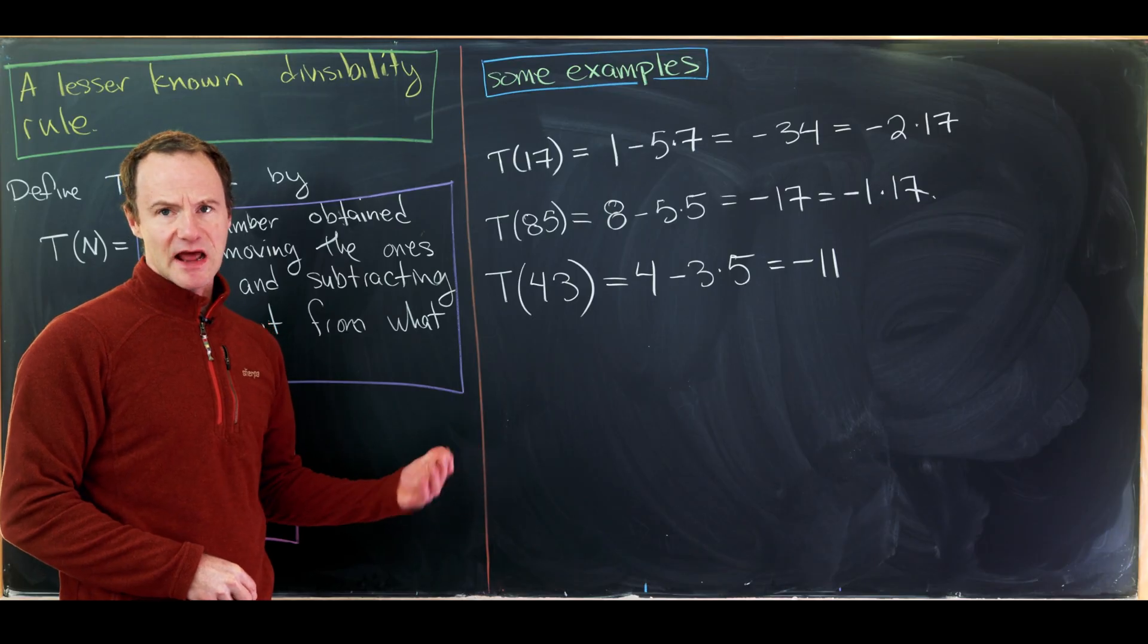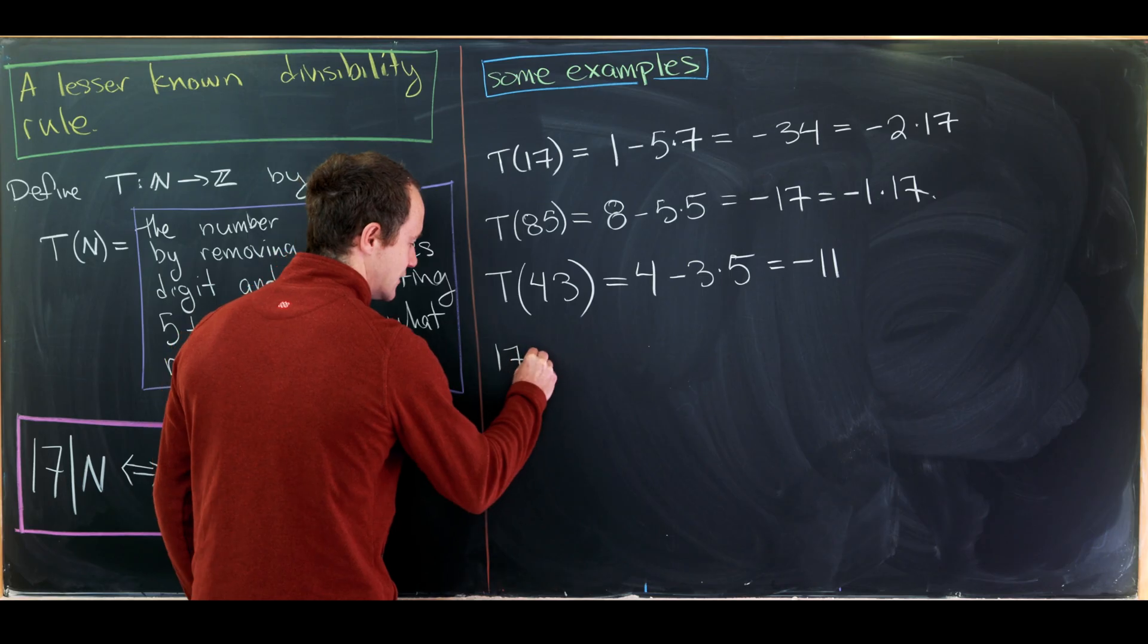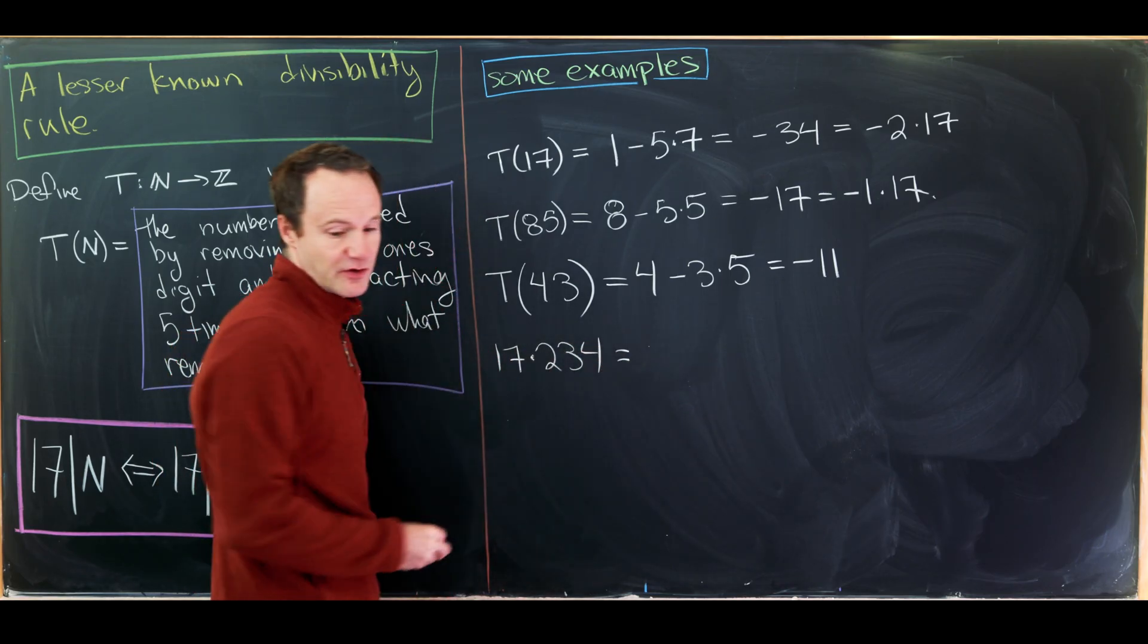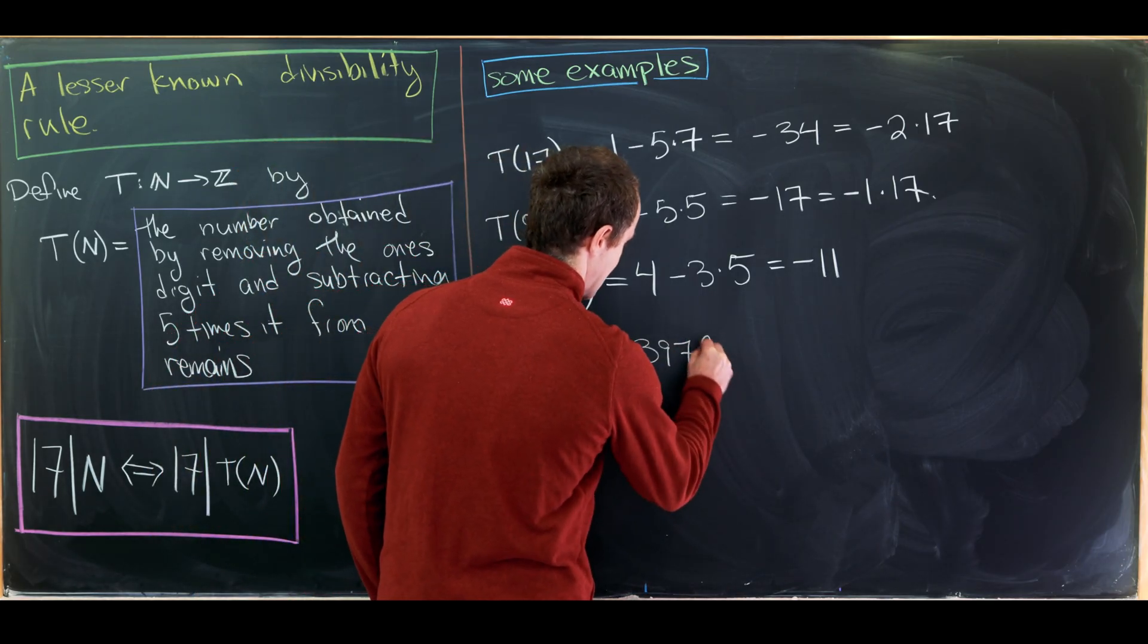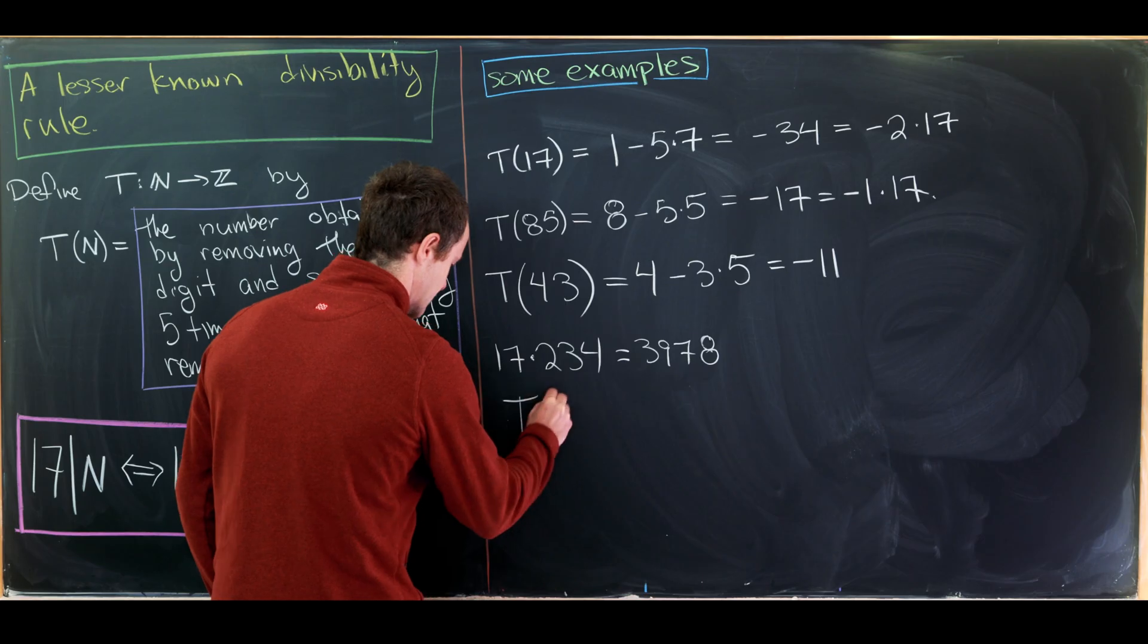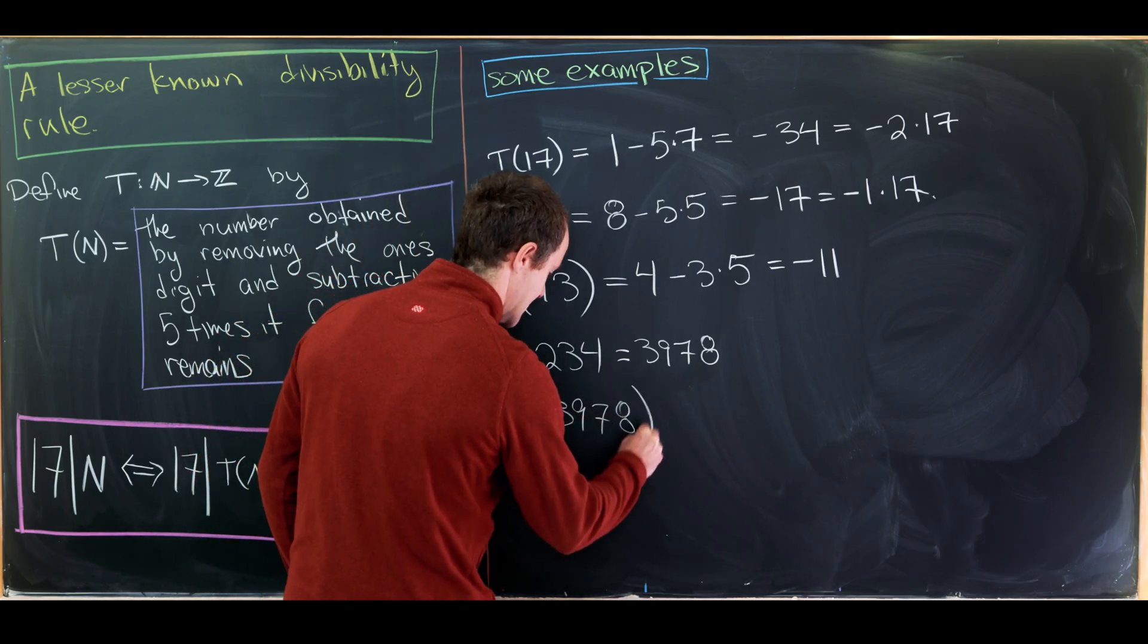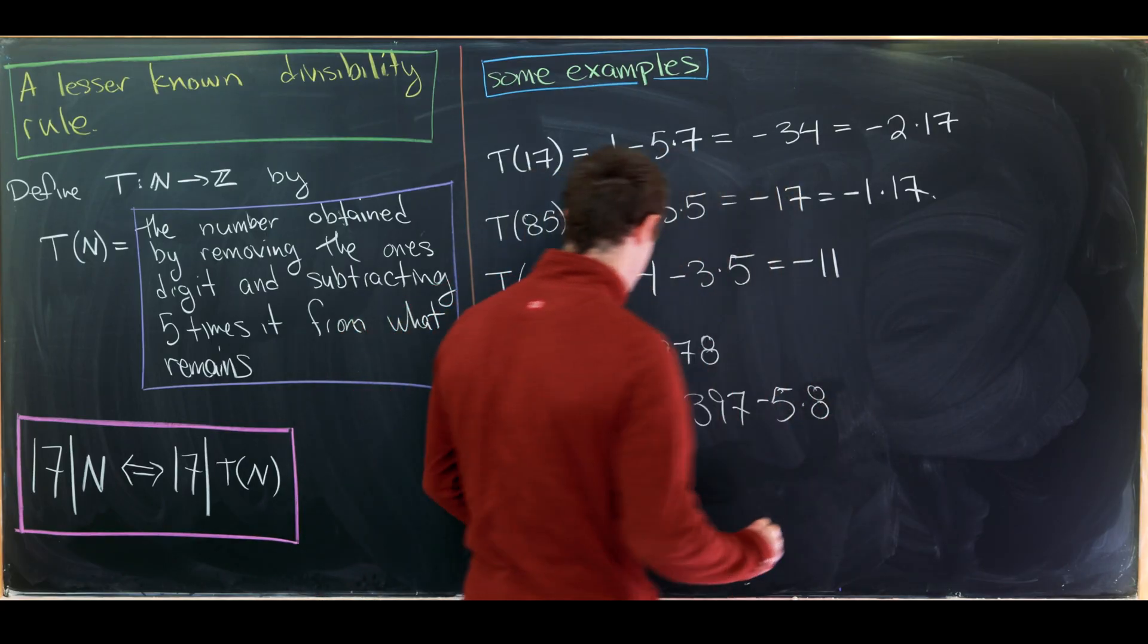Now maybe let's look at a bigger example. But in order to do that, let's notice that 17 times 234 is indeed equal to 3978. And now let's do our transformation to that number.